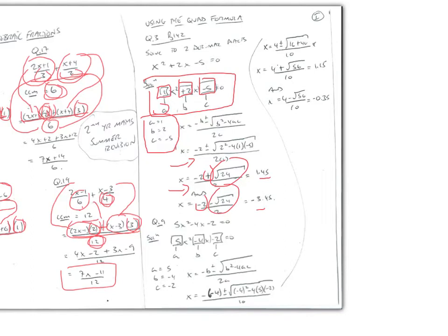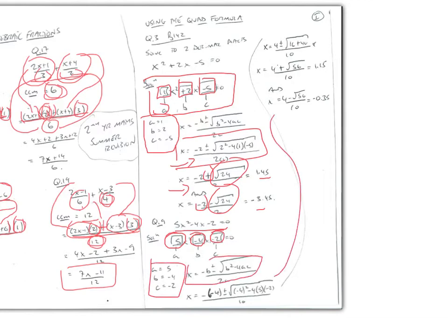Set up your calculator using bubbles to solve those problems. Remember: a is always to the left of x², b is between x² and x, and c is between x and the equal sign. Be very clear about that. You should get two possible solutions for x, where x = (4 + ...) and x = (4 - ...).